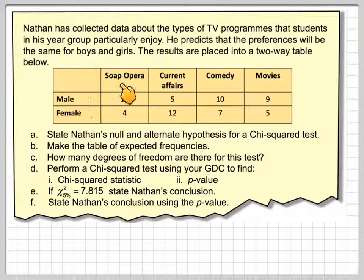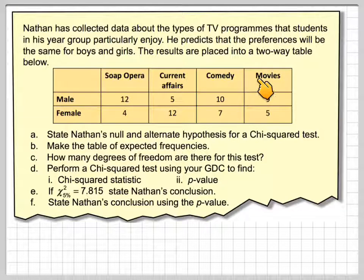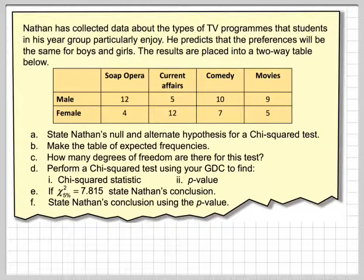We have male and female rows, with columns for soap opera, current affairs, comedy, and movies. 12 males like soap opera, 5 like current affairs, 10 like comedy, and 9 like movies. For females: 4 like soap operas, 12 current affairs, 7 comedy, and 5 movies. What we're trying to say is that no matter what the gender is, these choices are independent.